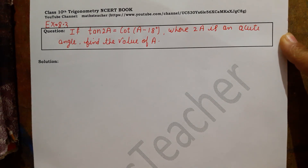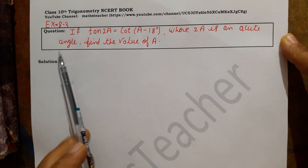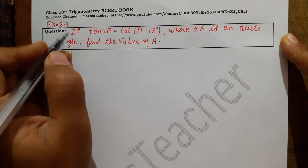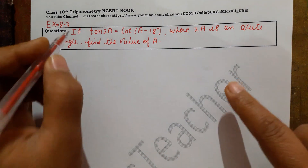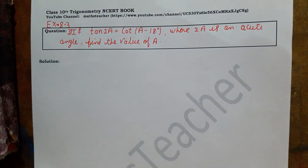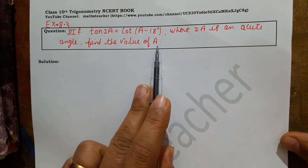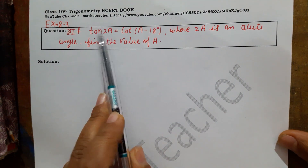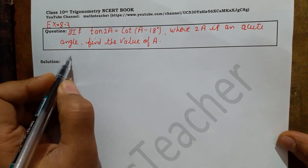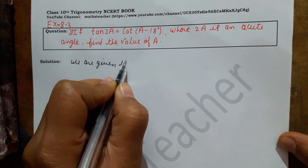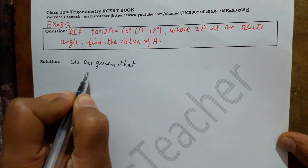Hello viewers, I am Rashmi, your math teacher, with another question of trigonometry — that is Exercise 8.3, Question Number 3. Question number 3 is: if tan 2A equals cot(A minus 18 degrees), where 2A is an acute angle, then find the value of A.